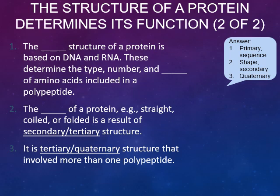The shape of a protein — for example, how straight, coiled, or folded it is — is a result of its secondary structure, while the tertiary structure is responsible for interactions of amino acids located farther away from one another. It is a quaternary structure that involves more than one polypeptide, typically two or four polypeptides. Within the hemoglobin molecule, there are four polypeptides that make up hemoglobin.